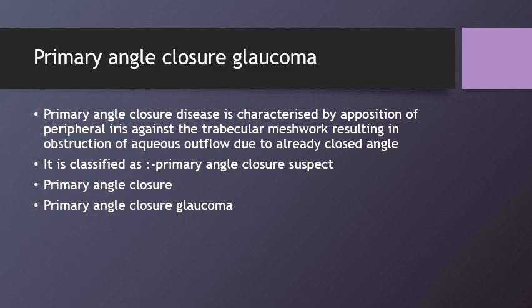The definition of primary angle closure glaucoma states that it is characterized by the apposition of the peripheral iris against the trabecular meshwork, resulting in the obstruction of the aqueous outflow due to the already closed angle. The primary angle closure disease is classified as primary angle closure suspect, primary angle closure, and primary angle closure glaucoma.